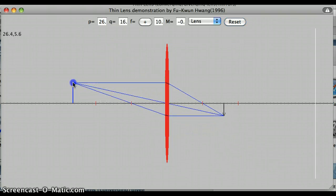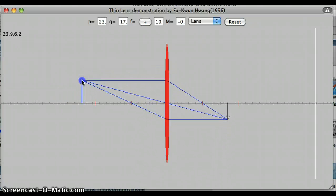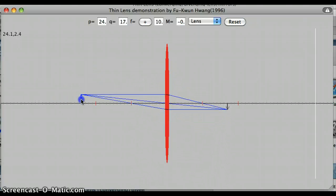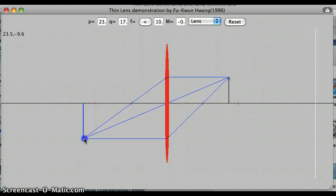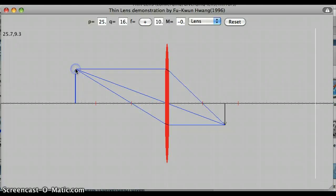So I can change the location of my object and see where the image shows up. I can change the size of my object. You can even drag it down below the axis so that the object is drawn below our optical axis rather than above. So those are some things I can play with as I do this.